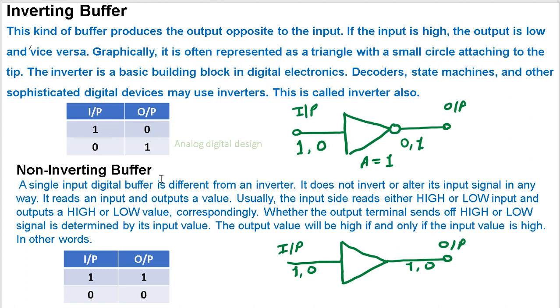Now we talk about the non-inverting buffer. This is the symbol of non-inverting buffer, and this is the symbol of inverting buffer. What is the difference? It has a bubble and it does not have a bubble.